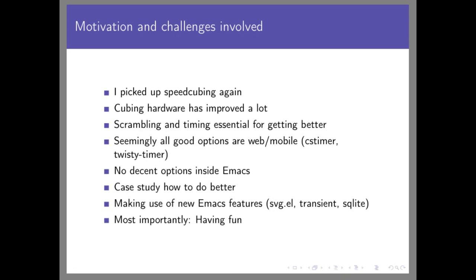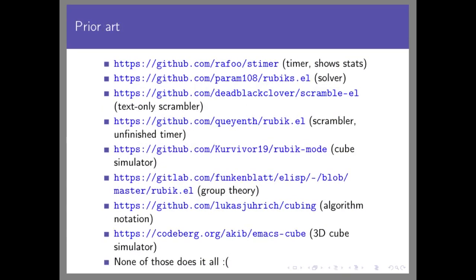This is basically a case study in how to do better. I wanted to make use of all the cool new Emacs features: the SVG library, the library used for Magit-style interfaces, and the recently added transient mode. There's a full list of prior art — things solving very different parts of the problem: timers, solvers, scramblers, whole cube simulators including a 3D one — but nothing that does all of those things in one package, which surprised me.